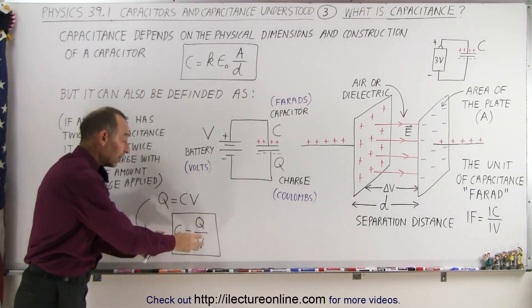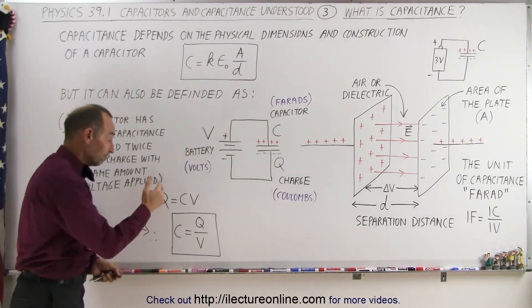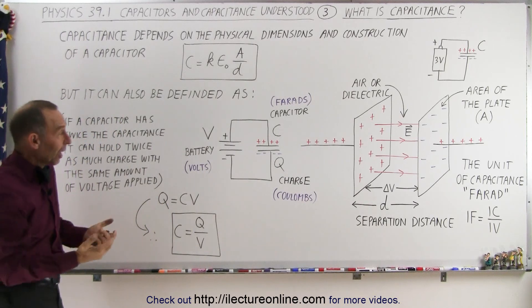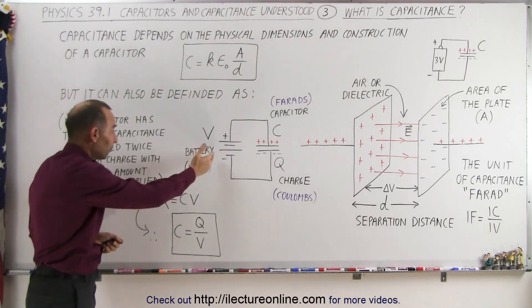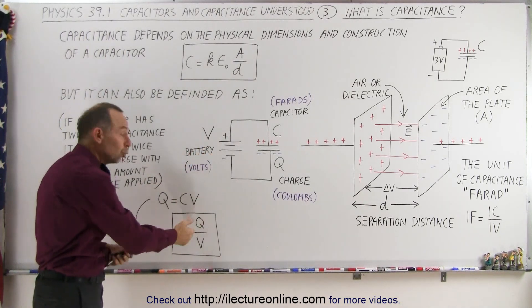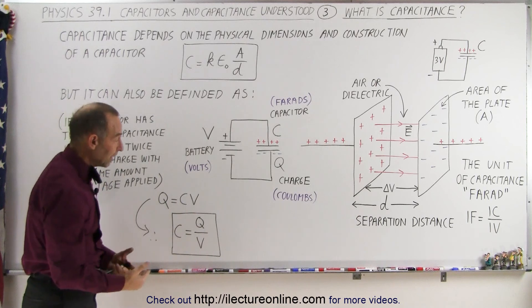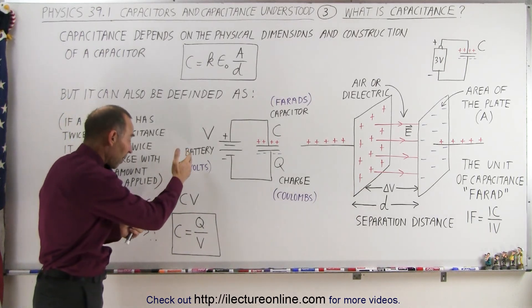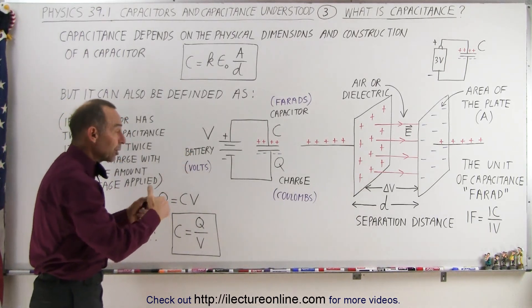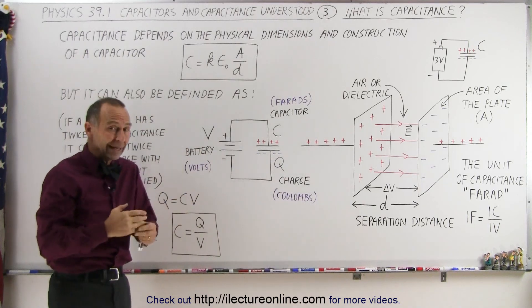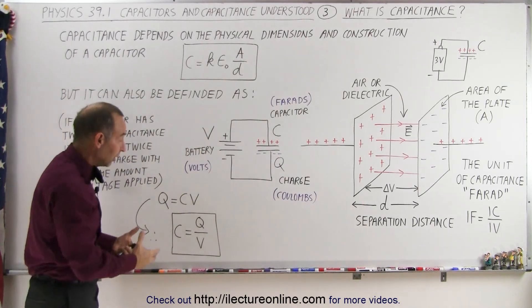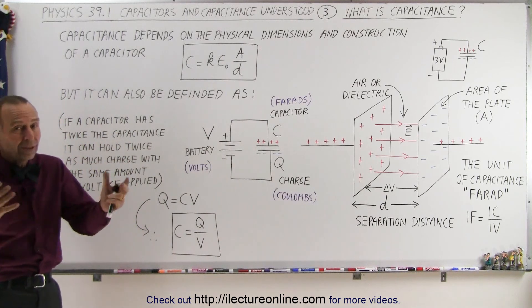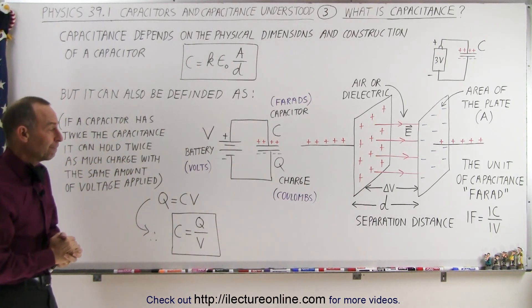The more charge you collect for a particular amount of voltage, the more capacitance the capacitor has. For example, if this is a three-volt battery and you collect one coulomb of charge, and now you have a second capacitor with the same three-volt battery and you collect two coulombs of charge — it can hold twice as much charge, and therefore has twice as much capacitance when the same voltage is applied.